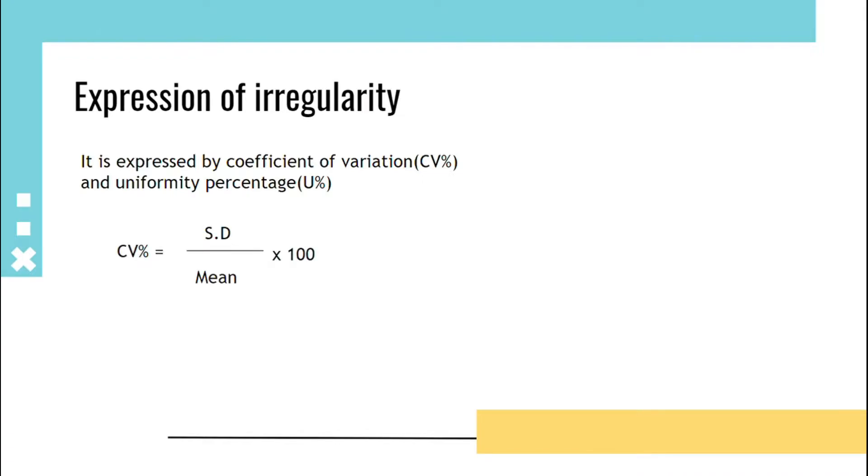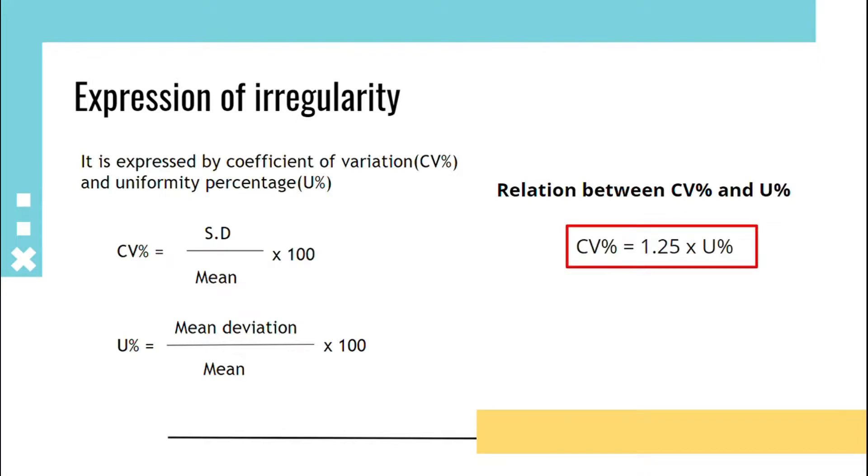CV is standard deviation upon mean multiplied by 100, and U% is mean deviation upon mean multiplied by 100. The relation between CV% and U% is CV% equals 1.25 into U%. This U% is also called percentage mean deviation.